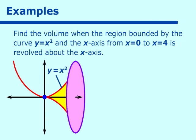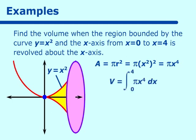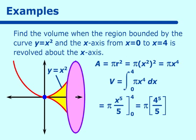Our radius is really y, which is equal to x squared. The area equals pi r squared, which in this case equals pi times x squared squared, which is pi x to the fourth. So the volume equals the integral from 0 to 4 of pi x to the fourth dx. Computing this, we get pi times x to the fifth over 5, evaluated from 0 to 4, giving us pi times 4 to the fifth over 5 minus 0, which equals 1024 pi over 5. Very simple problem.